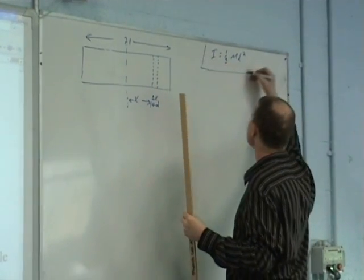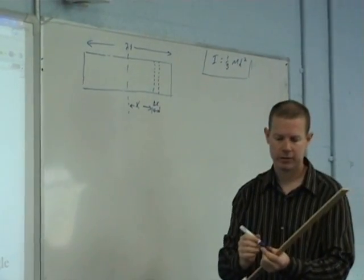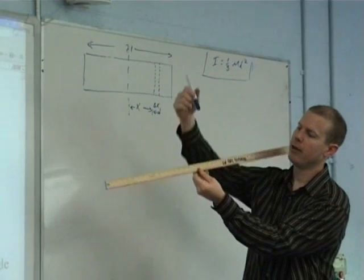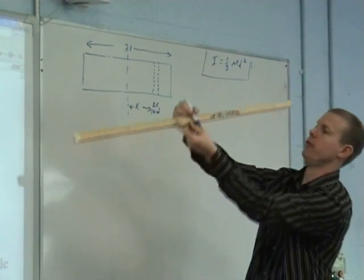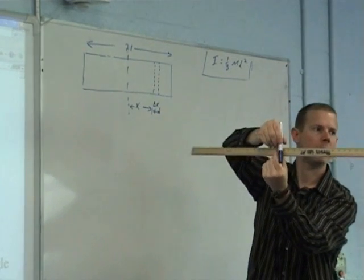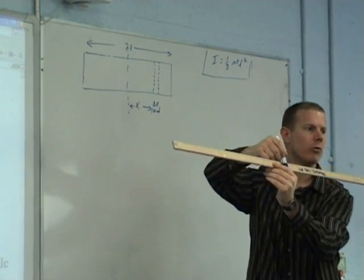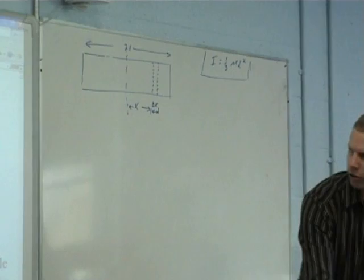And you will be told to show that it is 1 over 3 ML squared. So it's as if I had an axis over to my 50 centimeter mark, which is here, which would basically mean that this guy would rotate in that direction and it would show it's 1 over 3 ML squared. So Ross, you're going to start us off.